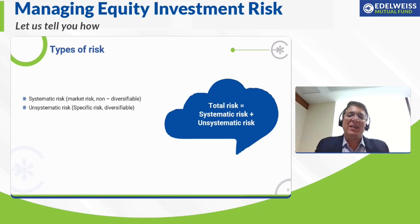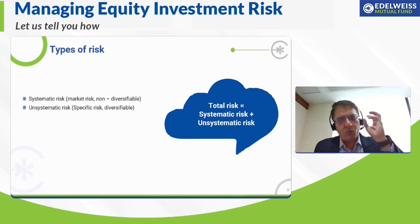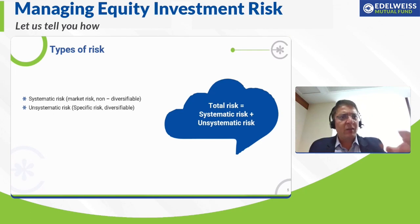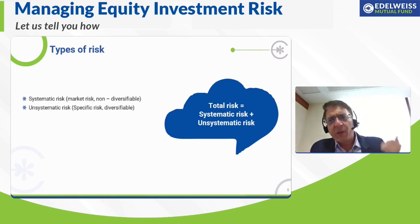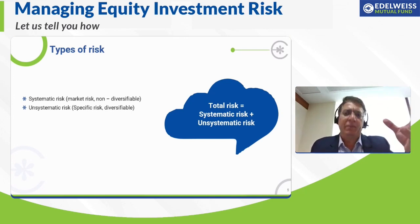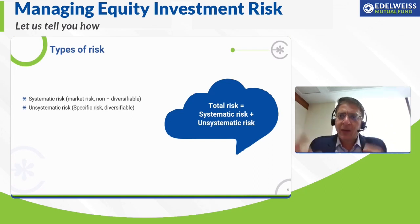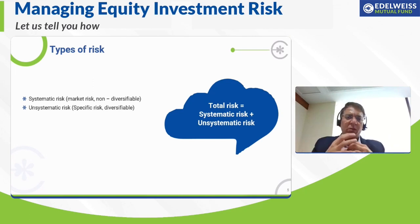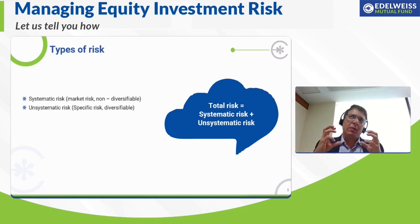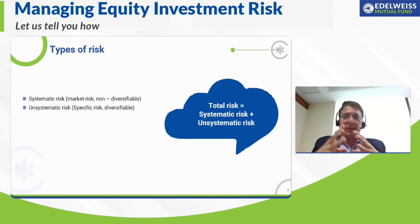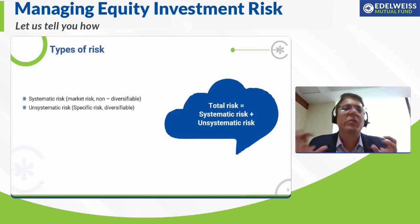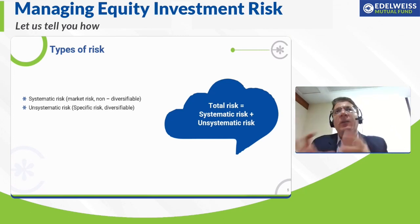The second type is unsystematic risk, or specific risk. If I invest only in one security or one scheme, and the markets are doing well but this particular security or scheme is performing negatively, that is a specific risk to that security or scheme. This is a risk I can manage through diversification — as they say, don't put all your eggs in one basket. You diversify by investing in multiple schemes and multiple securities so that you are not taking any specific security or scheme risk.